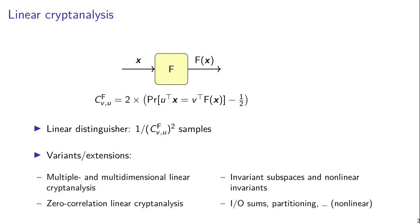then we would expect that this probability is very close to one-half. So we can define a measure of quality as 2 times the distance of that probability from one-half, and this is what we call the correlation of that linear approximation.